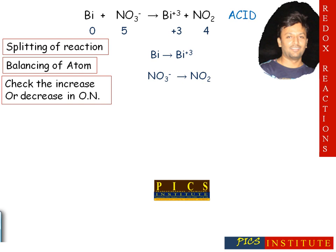Now check the increase or decrease in oxidation number. In the first equation, the oxidation number of bismuth is zero and becomes +3, so there is an increase in oxidation number by three units. In the second equation, the oxidation number of nitrogen in nitrate is +5 and in nitrogen dioxide it is +4, so we can say it decreases by one unit.